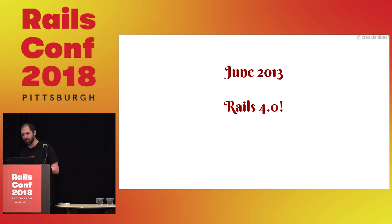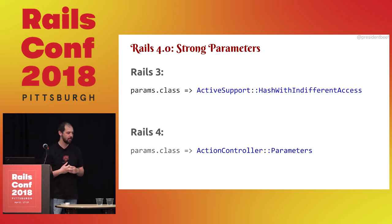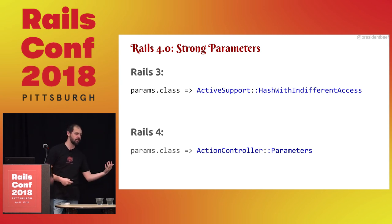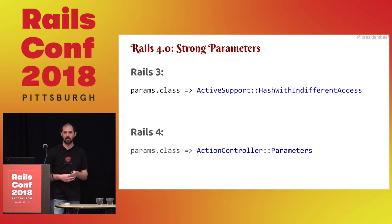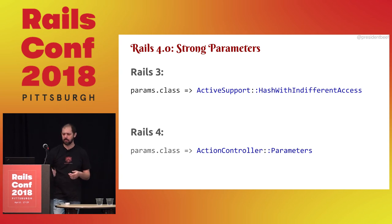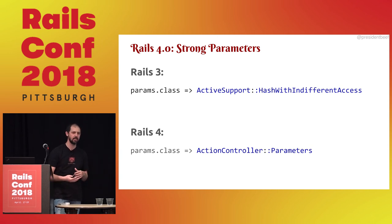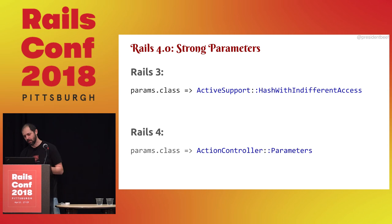June 2013, Rails 4.0 — hooray, strong parameters. Before this, parameters were hashes with different access. What's cool about having it be its own thing now is you can start layering security on top. For example, redirect_to now checks to make sure you're not passing params directly to it, same with url_for. You can also pass params into Active Record methods — it'll be converted to a hash automatically, preventing some SQL injection issues.